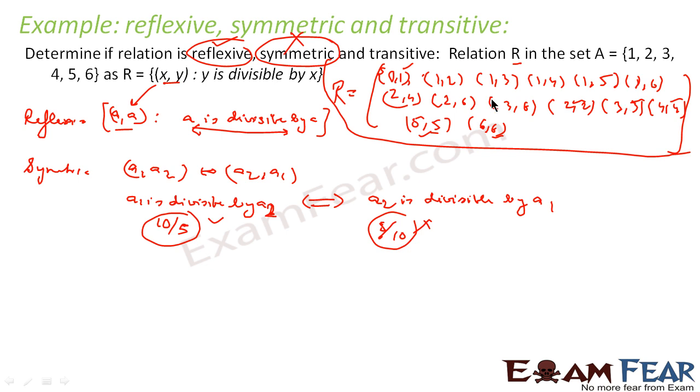We will take an example. (2, 6) is a value here. But (6, 2) is not existing. (2, 6) exists, but (6, 2) is not there in the set. So we can say that it is not symmetric. Correct?